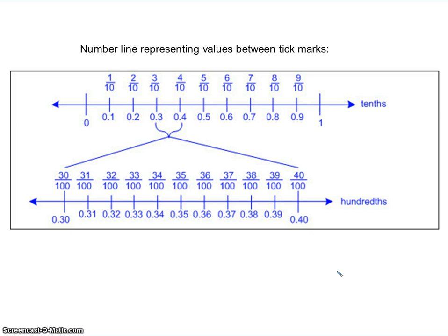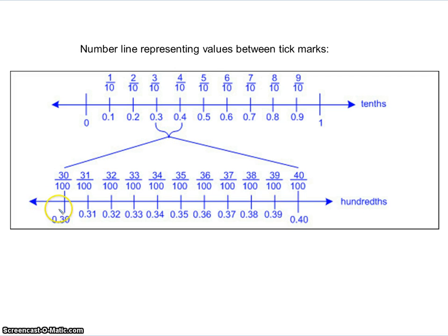This is a good example of what we were just talking about. The top number line is from zero to one, just like what we saw before. But if I just focus on the space from point three to point four, that distance could be made into its own number line going from 0.3 to 0.4. The markings in between, if I have ten equal spaces, would each represent one hundredth.